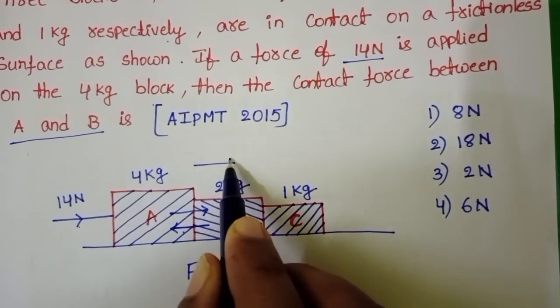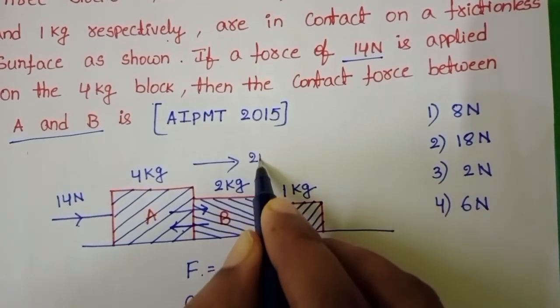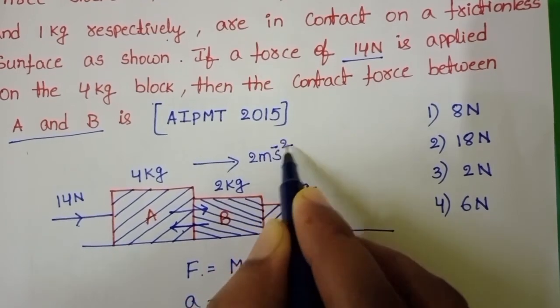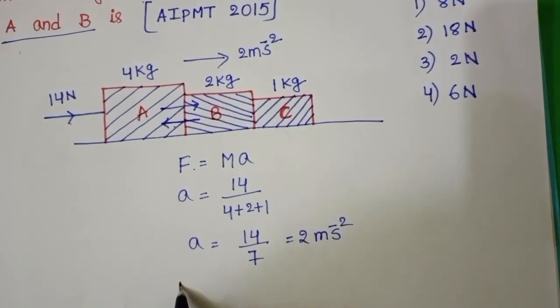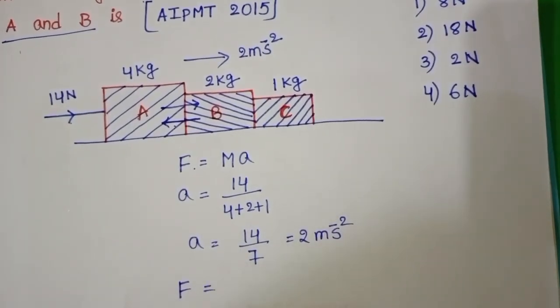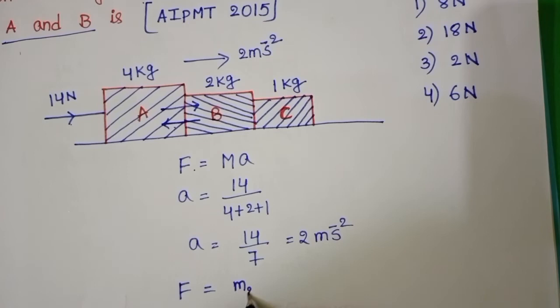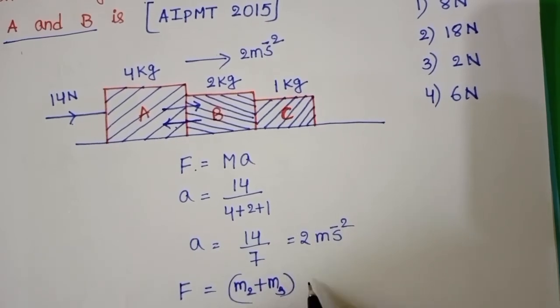The acceleration of this system is 2 meters per second squared in the direction of the applied force. To find the contact force between A and B: F equals (M2 plus M3) times a.